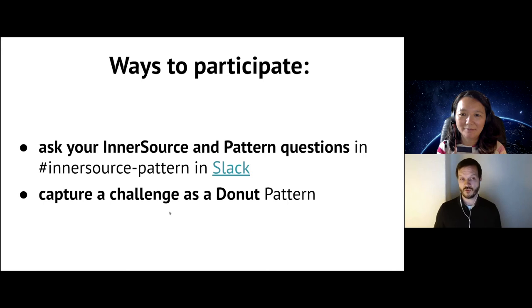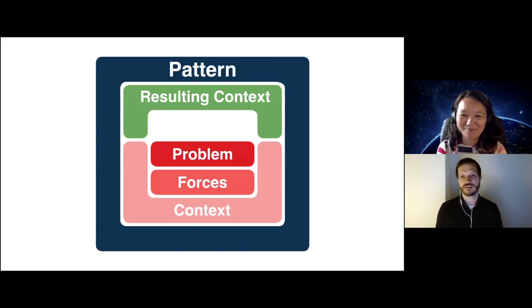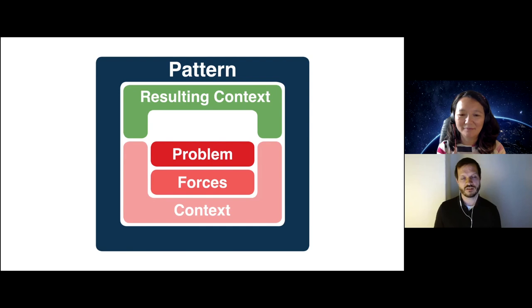Another way is, if you are into writing, you could try to describe the challenge you're facing as a donut pattern. A donut is basically a pattern that doesn't have a solution yet — it has a hole in the middle, just like a donut. You can describe everything: the situation at your company, the context, forces, problem, even the resulting context you're looking for — and you just don't know how to get there. We found that's actually a really useful way to think through a problem, even if you don't have the solution yet.